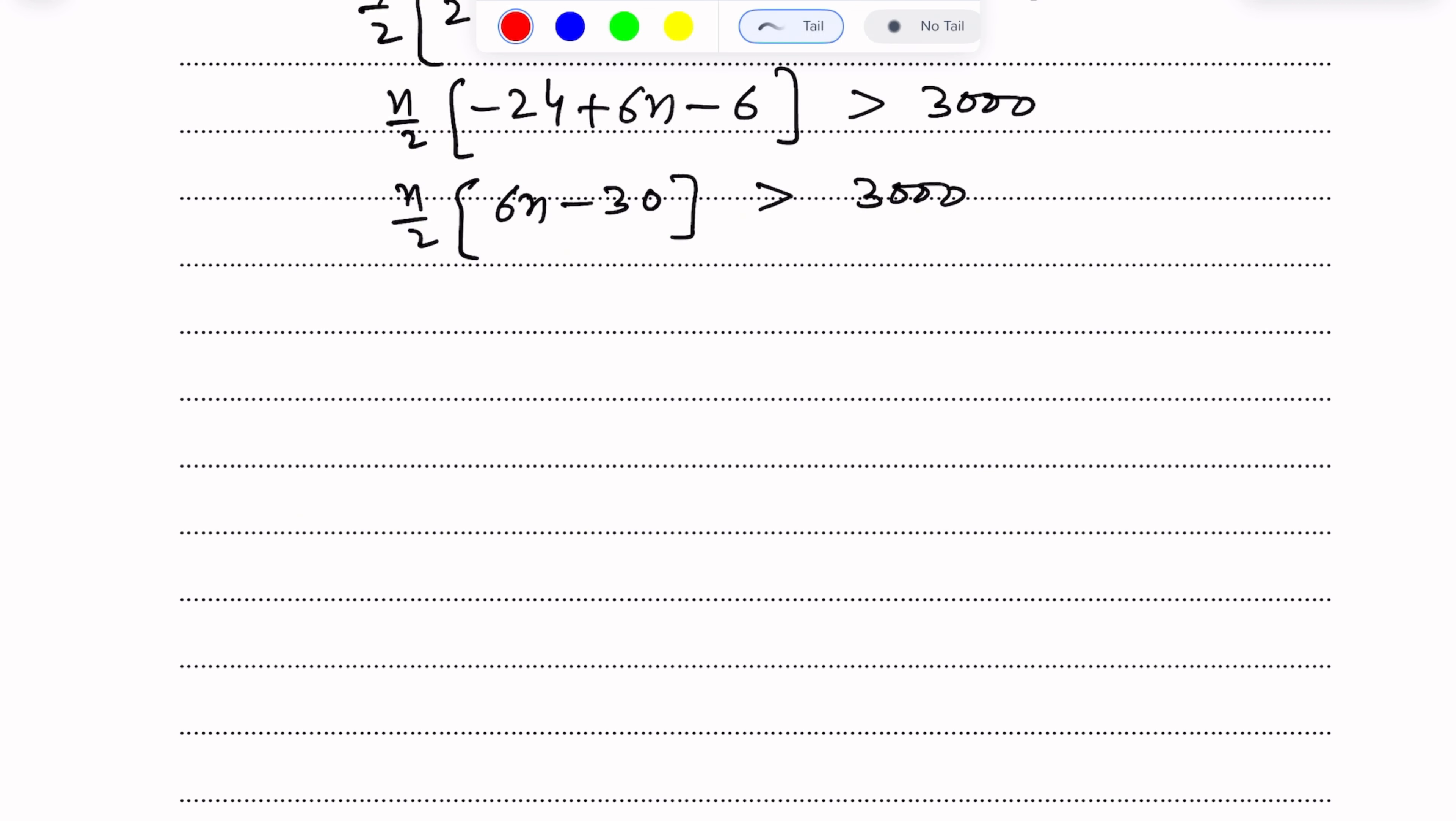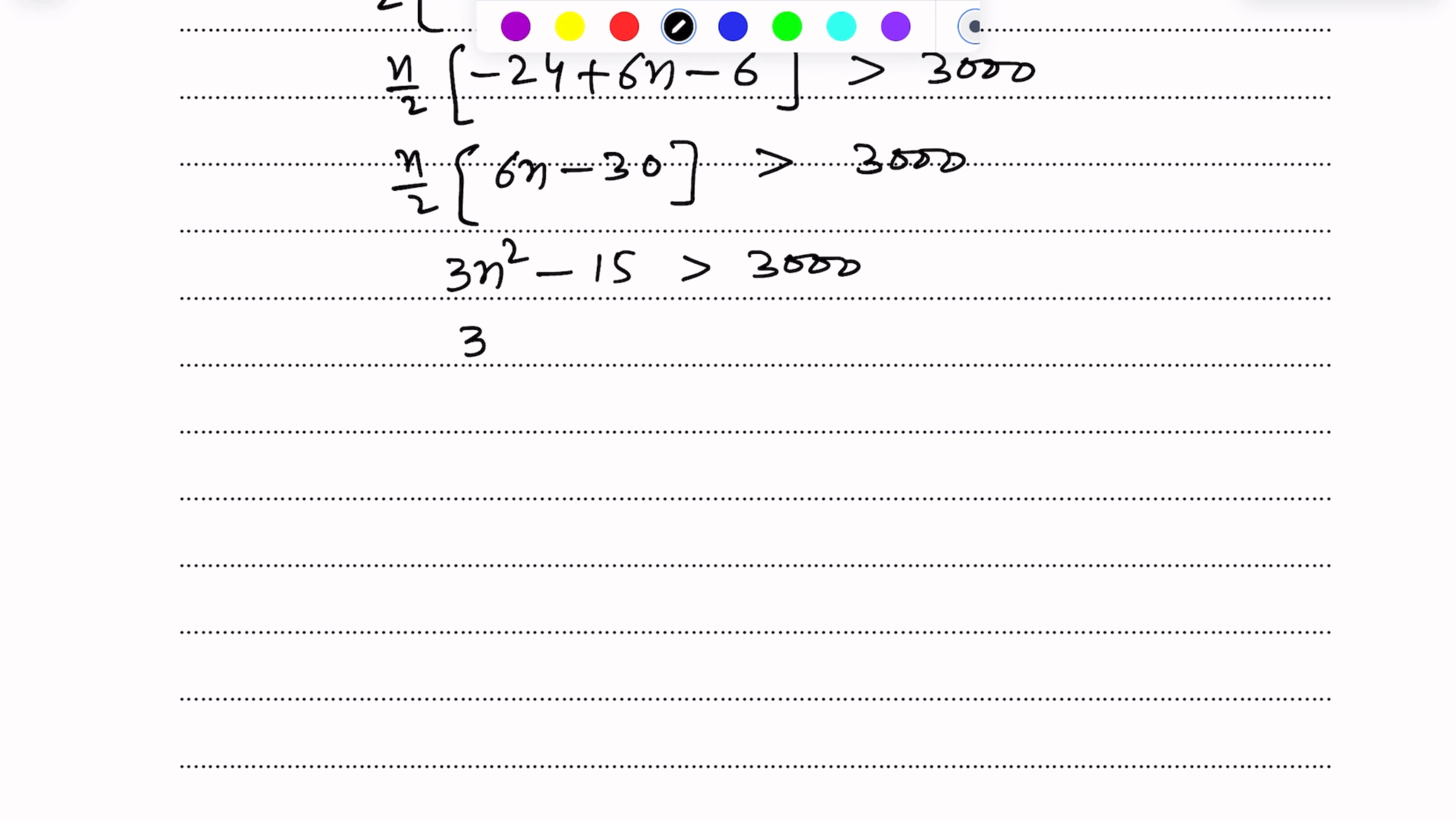Further simplifying, now we have n over 2 in both terms bracket multiply. This will become 3n square minus 15n is greater than 3000. Now quadratic inequality has come to us. 3n square minus 15n minus 3000 greater than 0. Each term of this expression is divisible by 3, so we can further simplify it by dividing by 3 each side.